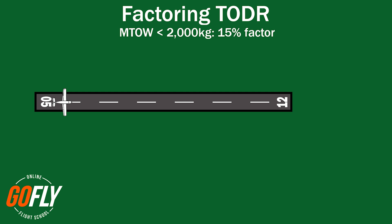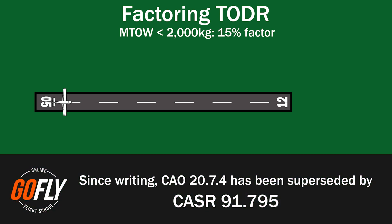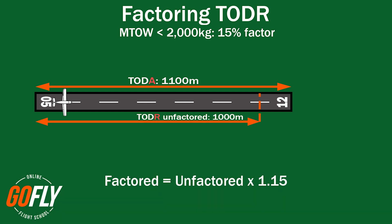Our actual take-off distance required is calculated using your aircraft's POH, which accounts for all of the factors previously mentioned, and then adding 15% if your aircraft is less than 2,000 kilos. This extra 15% is a legal requirement from CASA, as per CAO 20.7.4. This means that if your calculated take-off distance required from the POH is 1,000 metres, your factored take-off distance required would now be 1,150 metres, meaning you cannot legally take off from a runway unless it is 1,150 metres or longer, ignoring any clearways.